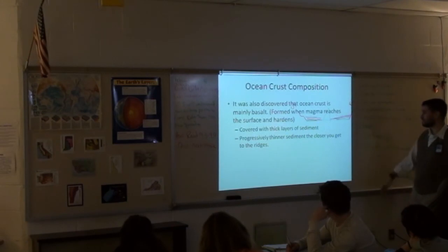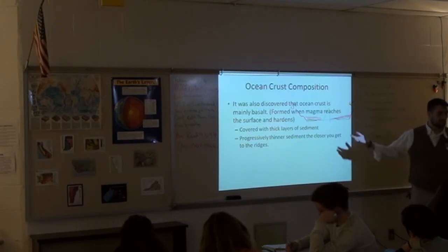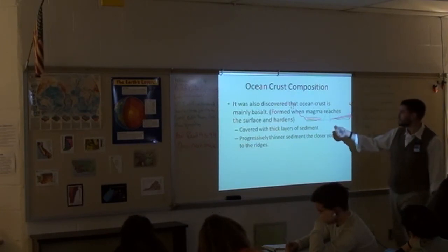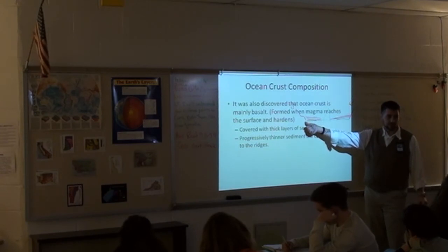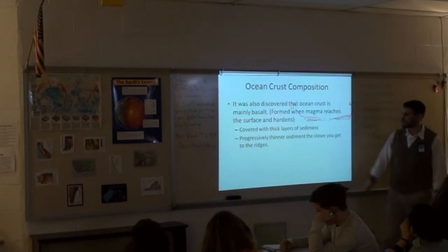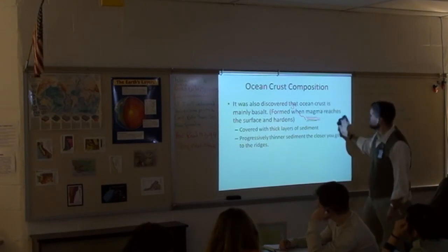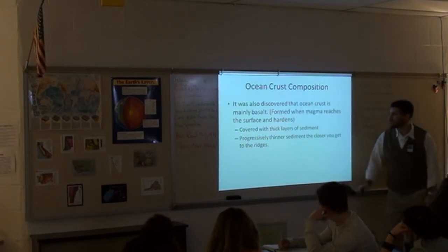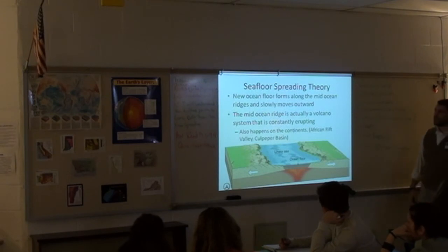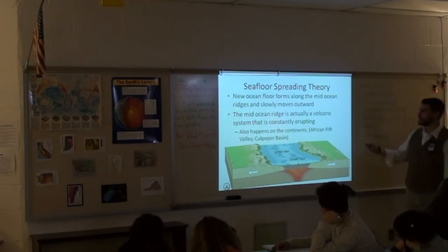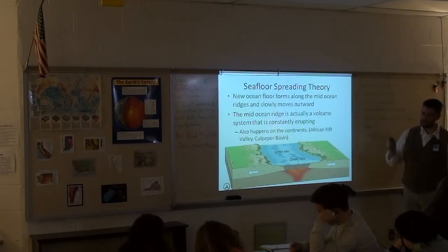How does the sediment form? Stuff falls down, dirt gets into the water and settles out, animal carapaces die and settle out — lots of ways. So why is there thinner sediment toward the ridge and thicker sediment away from the ridge? They were starting to put two and two together. It didn't take them long to figure out that the sea is actually spreading in certain areas. Henry Hess came up with sea floor spreading theory: the sea floor is spreading.